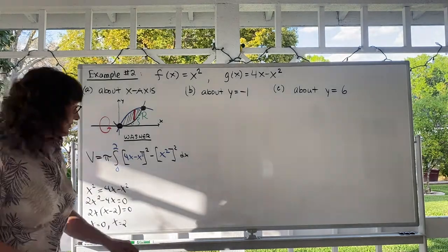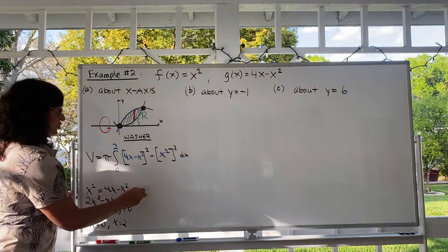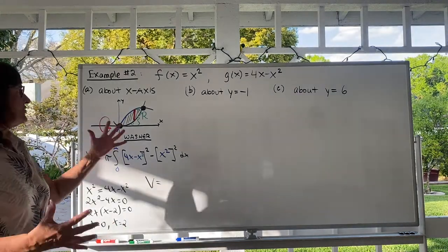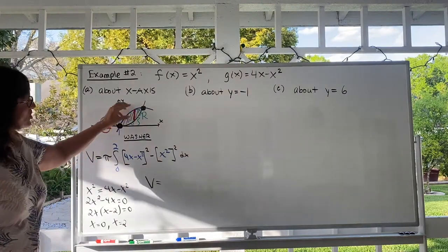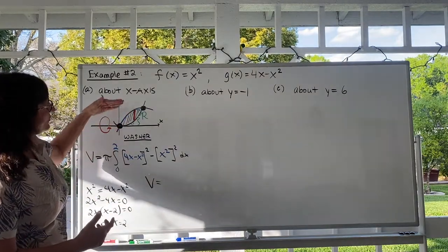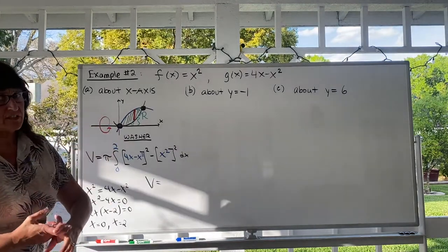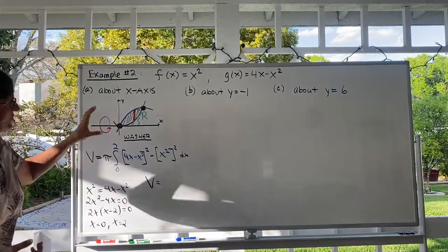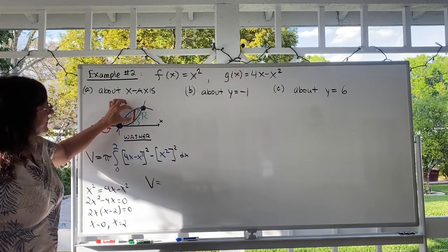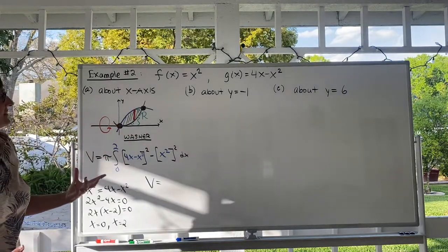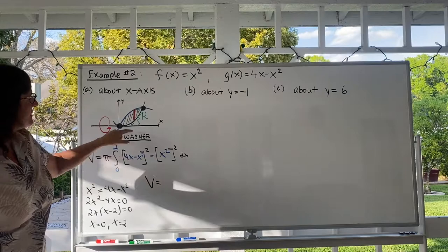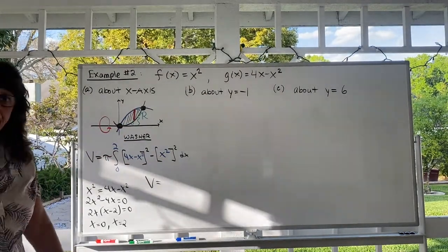Here is the equation completely set up: pi times the integral from 0 to 2 of [(4x − x²)² − (x²)²] dx. To review: sketch the curves — parabola opens up, parabola opens down, shade the region between them. Take this leaf-shaped region and revolve it around the x-axis. Since the representative rectangle is not sitting on the axis, it's a washer method. Big radius goes from axis to the far end; little radius goes from axis to the near end.